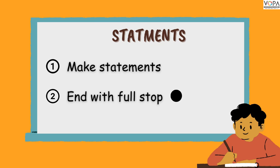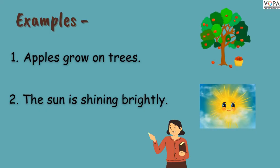Let's start with the first type of sentence, which is a statement. Have you ever shared information with someone? That is what a statement is. Listen carefully. A statement is a sentence that provides information. It ends with a full stop and it is used to convey information or opinion.